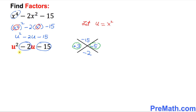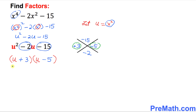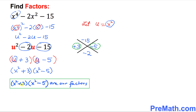Since we want to factor this, put down two parentheses. Since we are dealing with the u variable, put u in each parenthesis. Our two factors are positive 3 and negative 5, so we write (u + 3)(u - 5). But we know that u equals x squared, so we replace u by x squared. That gives us (x² + 3)(x² - 5). These are our factors.